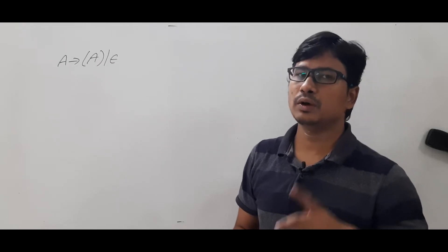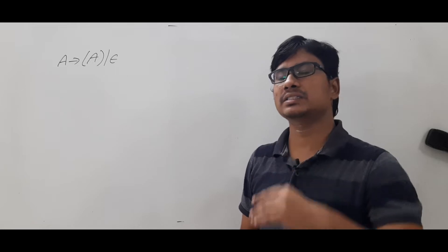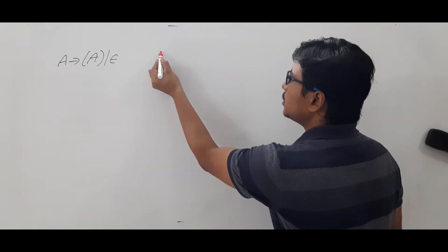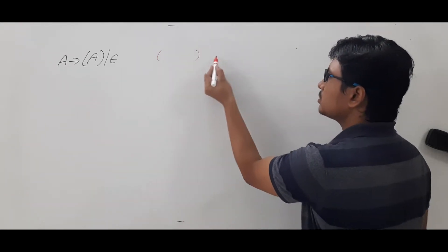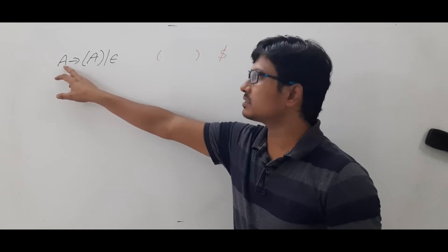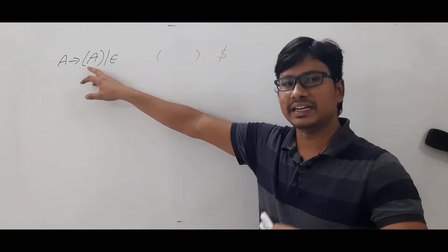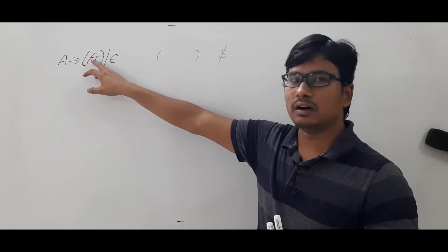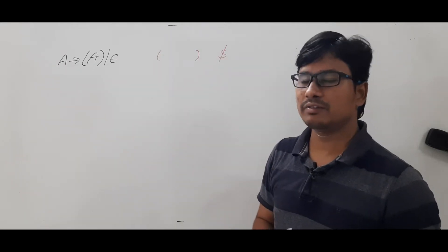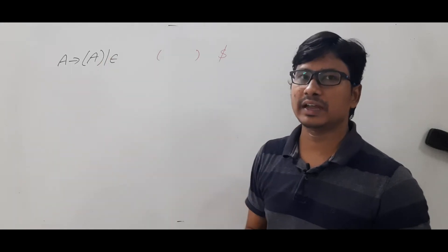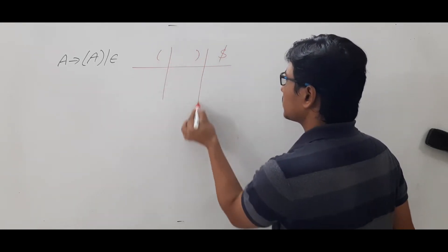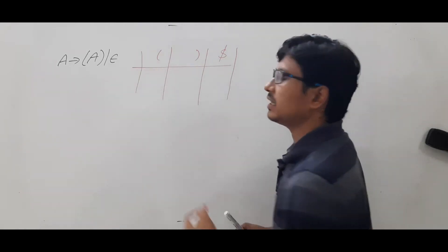First, we have to construct the LL1 parsing table. The entries in the table will have open braces, closed braces, and dollar as terminals. The non-terminal is A, and the symbols on the right-hand side other than non-terminals are terminals: open braces and closed braces. We also keep dollar as an extra column. We do not keep epsilon as a terminal in the LL1 parsing table.